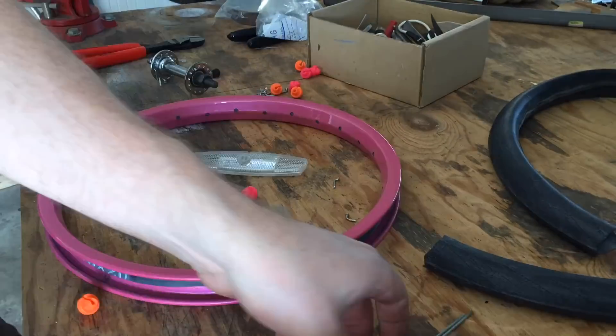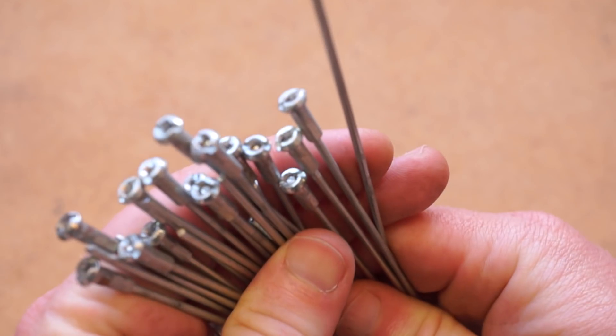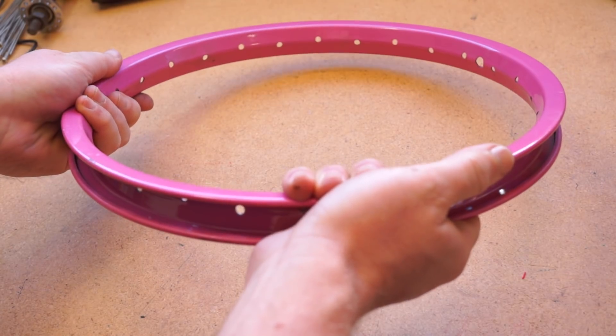You get a bike wheel and take out all of the spokes with clippers. I'm using a rim from a kid's bike. Be sure to wear eye protection when you're doing this part of it.